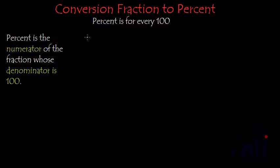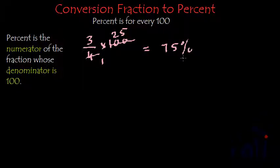And now let's convert 3 by 4 into percentage. So what we have to do? We just have to multiply it by 100. 4 ones are 4, 4 to the 8, 4 fives are 20 and 25 multiplied by 3 is 75 and this will be equal to 75 percent.